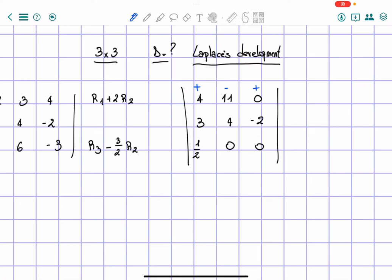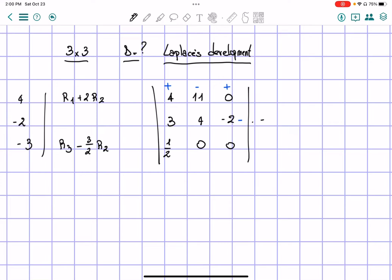The first one will be a plus, second element will be a minus, third element will be a plus, always in the first row. And if we go in the second row, this one will be a minus.